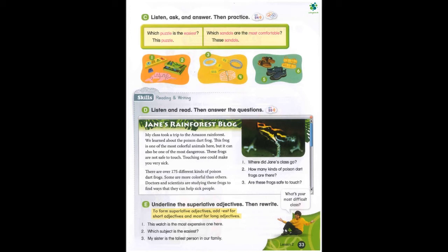Page 33. Skills. Reading and Writing. D. Listen and read. Then answer the questions. Jane's Rainforest Blog. My class took a trip to the Amazon rainforest. We learned about the poison dart frog. This frog is one of the most colorful animals here, but it can also be one of the most dangerous. These frogs are not safe to touch. Touching one could make you very sick. There are over 175 different kinds of poison dart frogs. Some are more colorful than others. Doctors and scientists are studying these frogs to find ways that they can help sick people. 1. Where did Jane's class go? 2. How many kinds of poison dart frogs are there? 3. Are these frogs safe to touch?